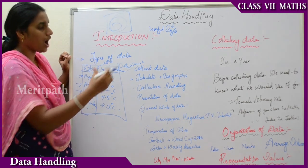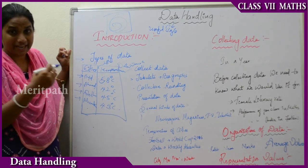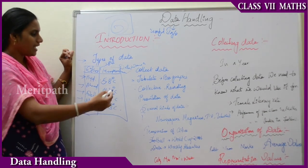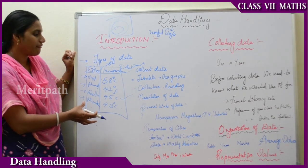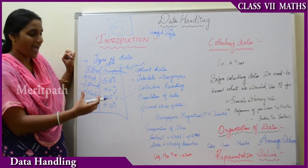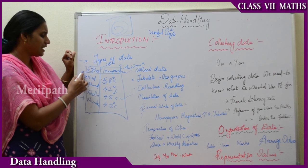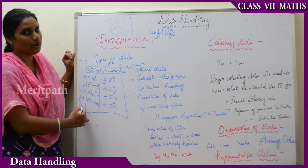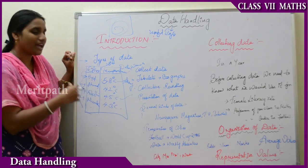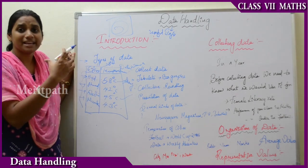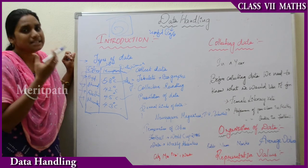Now we will see how to collect the data — what is the reason to collect it. See, in this table I have written some information. But now I want to analyze which city has the maximum temperature in a year. Can I get that from this table? No, because here I have written only one particular day's information. So how can I get the whole year's temperature — the average, maximum, or minimum temperature of a city?